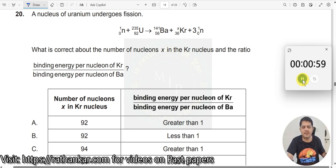Question number 20: a nucleus of uranium undergoes fission. 0N1 92 uranium 235, a big nucleus, is hit by a nucleon, a neutron, so it breaks the neutron, the nucleus into two parts along with the neutrons have been seen. What is correct about the number of nucleons x in the krypton nucleus and the ratio?